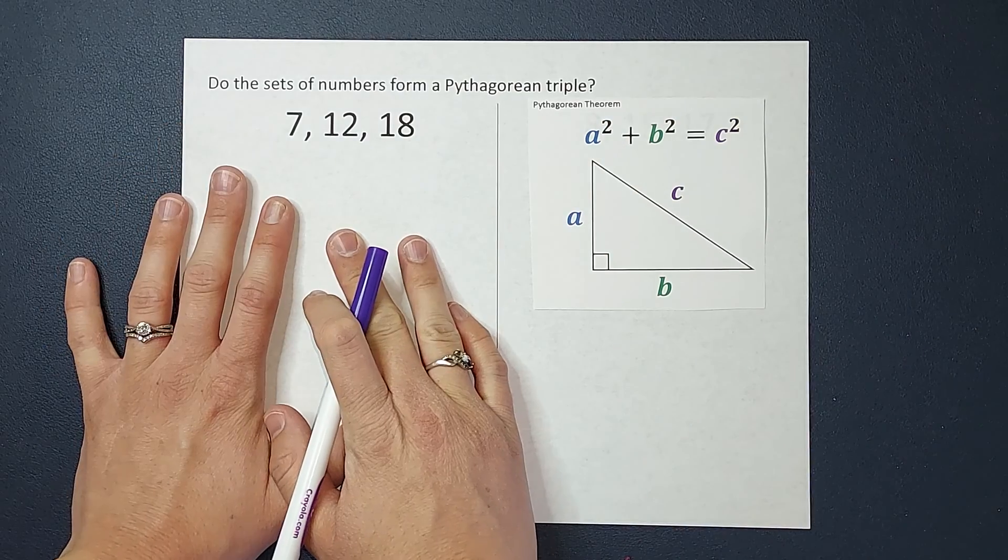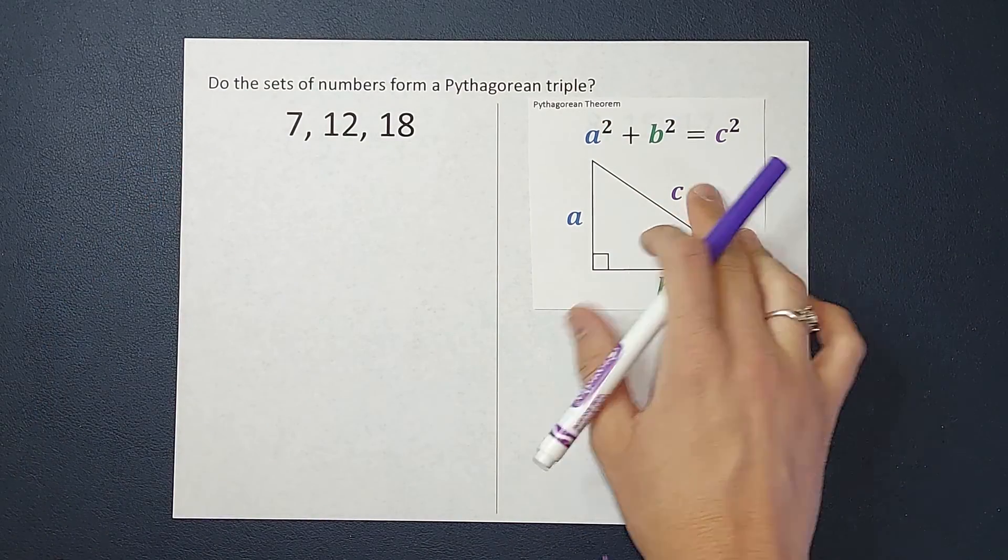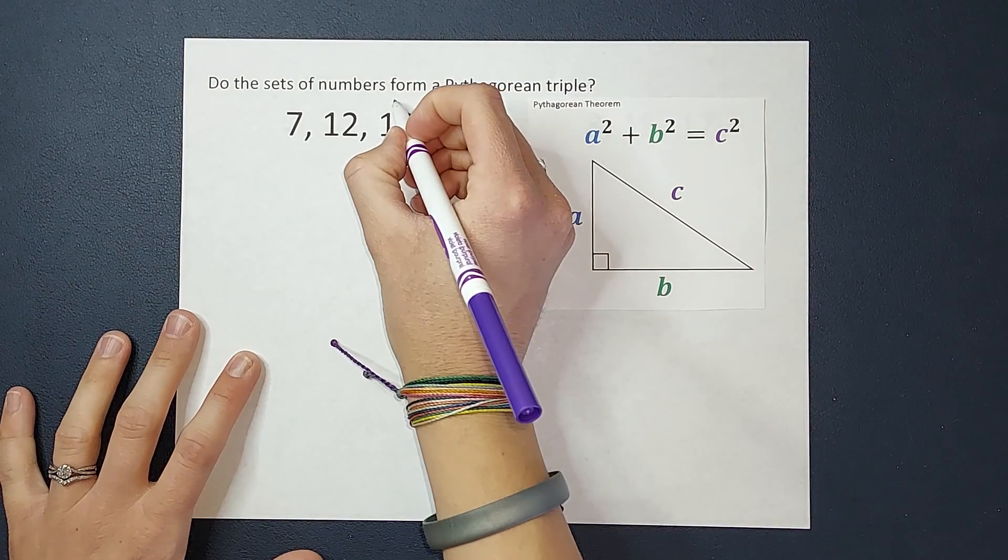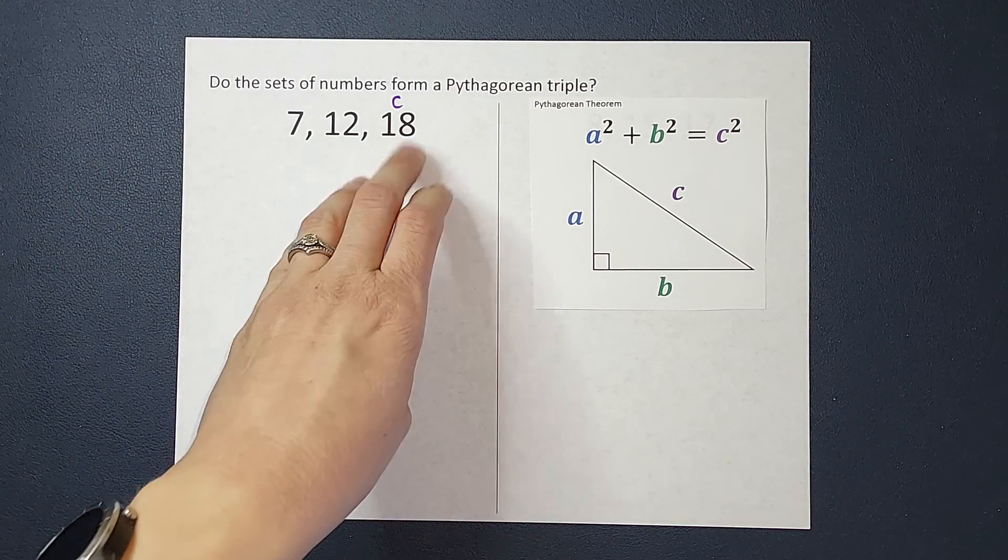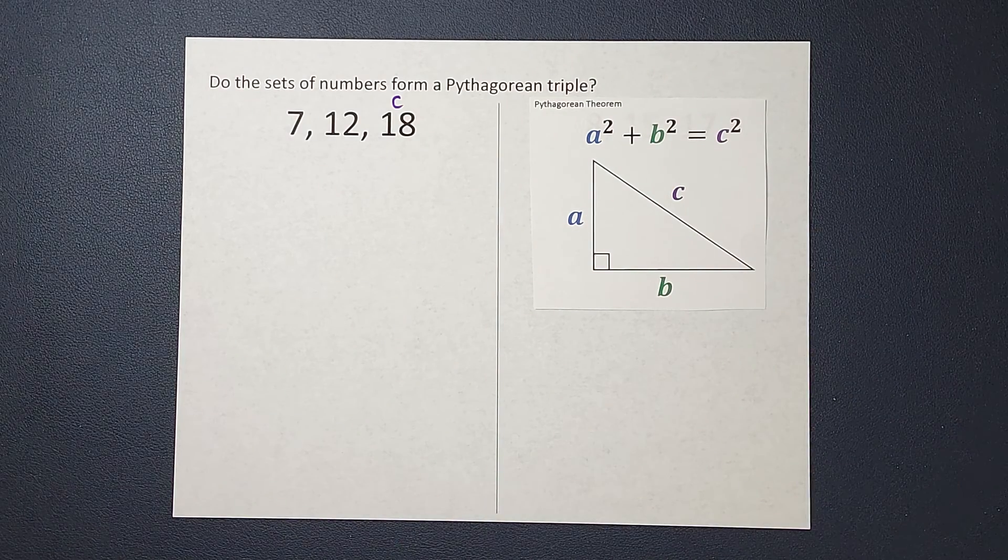We'll start right here, 7, 12, and 18. When I am plugging this in, the biggest number is going to be C. So in this case, 18 is going to be C. If this is a right triangle, 18, the biggest side would be my hypotenuse. So that's my C.